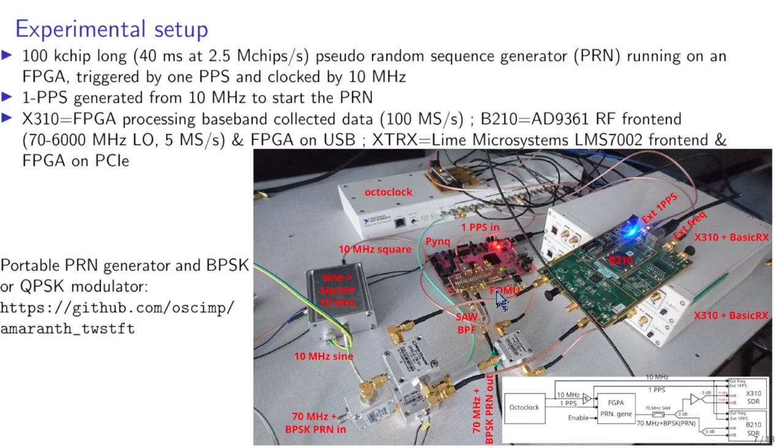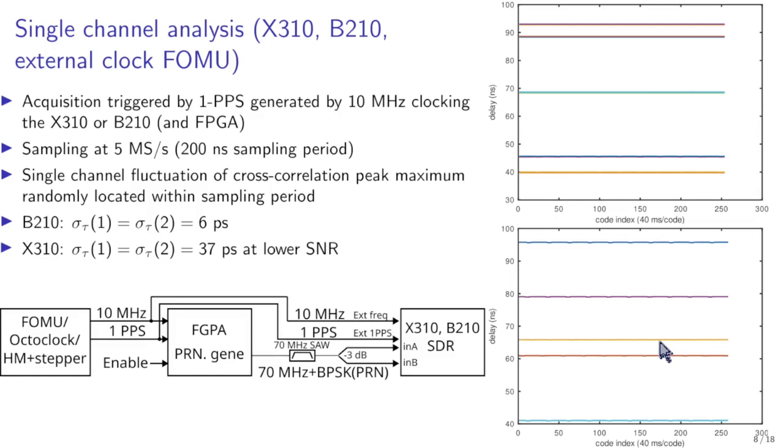So this is our experimental setup and the first question we might wonder is when we do measurements of this pseudo random sequence and analyze the time delay, first of all do we get something consistent and secondly is the one PPS enough to synchronize all the channels of these receivers. And the short answer is no. If for example you look at one channel, along the x-axis you've got something like 10 second measurement because each code lasts for 40 milliseconds and you see you have here 250 codes so that's 250 times 40 milliseconds and the multiple curves are because we repeat the experiment multiple times. And what you see is that if we look at one channel or the other channel, the one PPS is not enough to synchronize them because from one measurement to the other they just jump randomly. So the measurements are randomly distributed inside the sampling period.